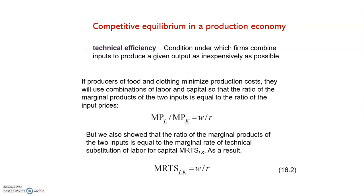If the labor and capital markets are perfectly competitive, then we know that the wage will be the same in all industries. Likewise, the rental price of capital, which is R, will be the same whether capital is used in the food or the clothing industry. These are the two industries that we have in our sample.